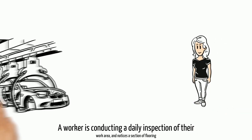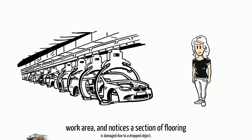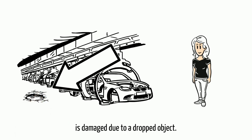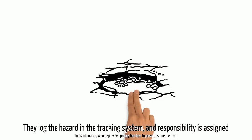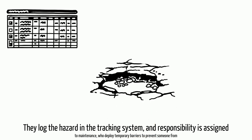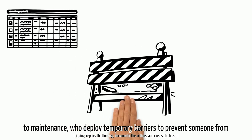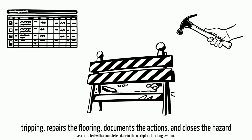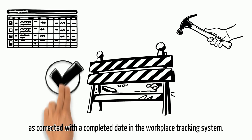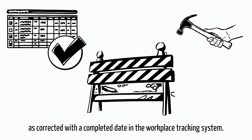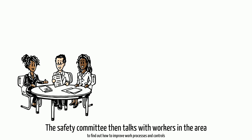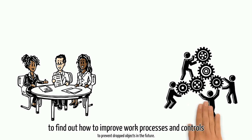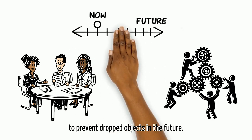Now, let's walk through an example. A worker is conducting a daily inspection of their work area and notices a section of flooring is damaged due to a dropped object. They log the hazard in the tracking system and responsibility is assigned to maintenance, who deploy temporary barriers to prevent someone from tripping, repairs the flooring, documents the actions, and closes the hazard as corrected with a completed date in the workplace tracking system.